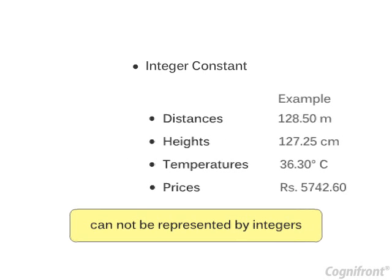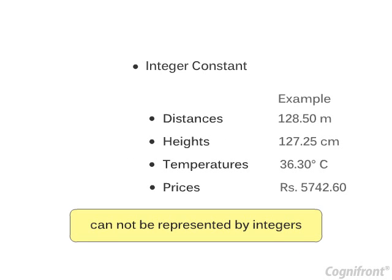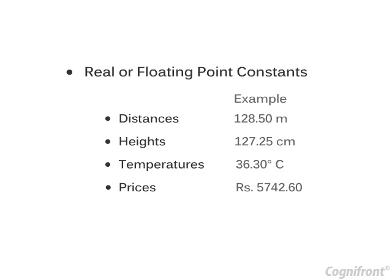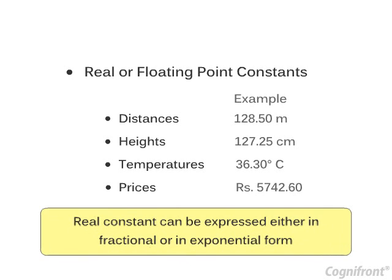Some quantities like distances, heights, temperatures, prices cannot be represented by integers. These quantities are represented by numbers containing fractional parts. Such numbers are called real or floating point constants. The real constant can be expressed either in fractional or in exponential form.